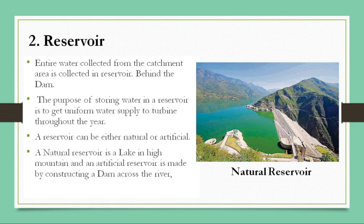The second component is a reservoir. The entire water collected from the catchment area is stored in the reservoir behind the dam. The purpose of storing water in the reservoir is to get uniform water supply to the turbine throughout the year. A reservoir can be either natural or artificial, and the choice depends on the topography of the area. A natural reservoir is a lake in the high mountains, and an artificial reservoir is made by constructing a dam across the river.